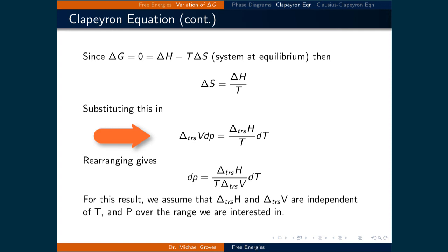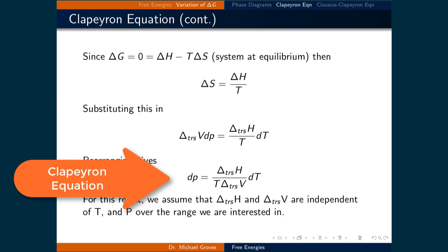We can substitute this into our derivation to get the change in molar volume of the transition times dp being equal to the change in enthalpy of the transition divided by the temperature times dT. Dividing both sides by the change in molar volume of the transition gives the Clapeyron equation, which is dp equals the change in enthalpy of the transition times dT divided by the temperature times the change in molar volume of the transition.